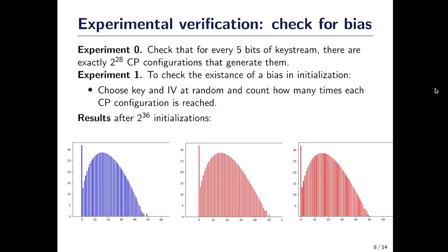We did the experiment. First, we checked if there was a bias in the generation of the keystream. When you have a given value for the five bits of keystream, there are exactly 2 to the power 28 configurations of the core part that will generate this keystream — so there was no bias there. The second experiment was to check if there was a bias in the initialization process: we sampled at random a key and an IV, ran the initialization phase, and counted how many times each configuration of the core part was reached.